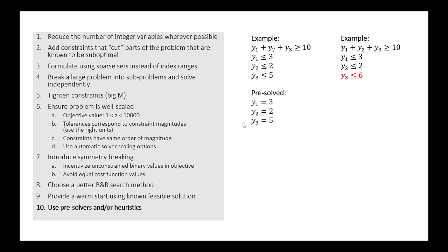Let's think about a slightly more complicated example where now instead of y3 is less than or equal to 5, we say y3 is less than or equal to 6. So now what happens? Well, we have a little bit more freedom in choosing the variables in the problem, but we can still eliminate a large region of the problem by looking at this and pre-solving it.